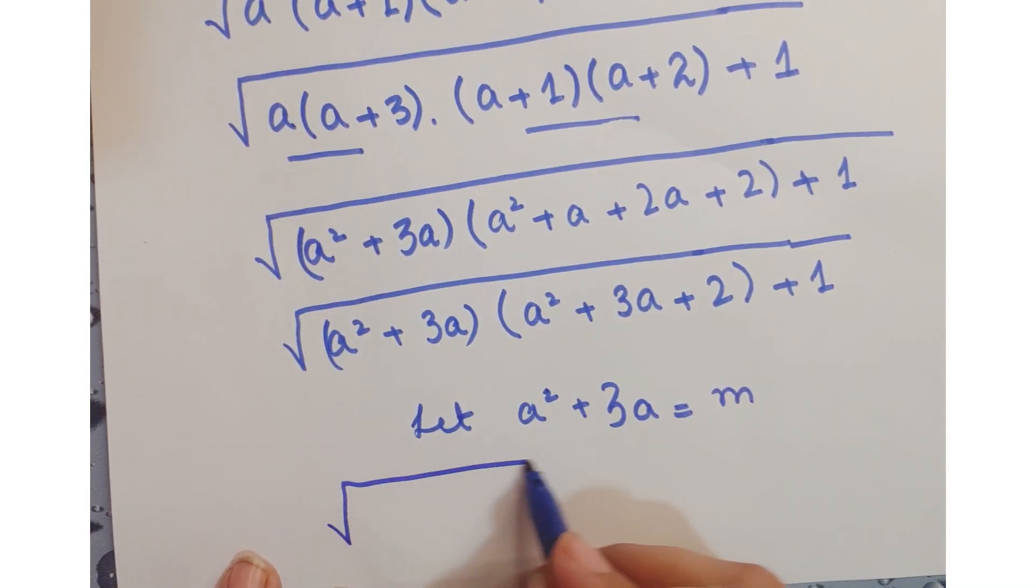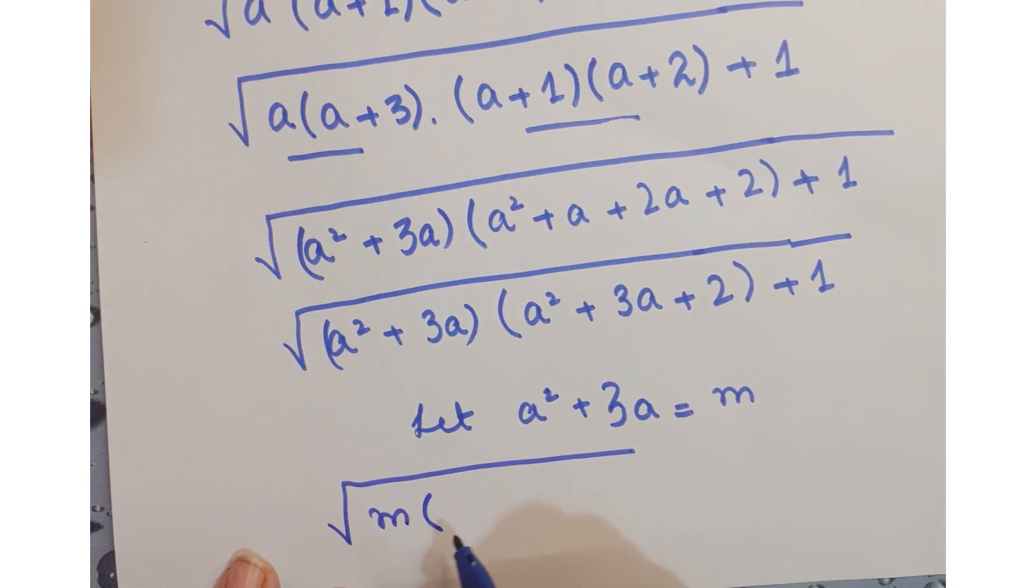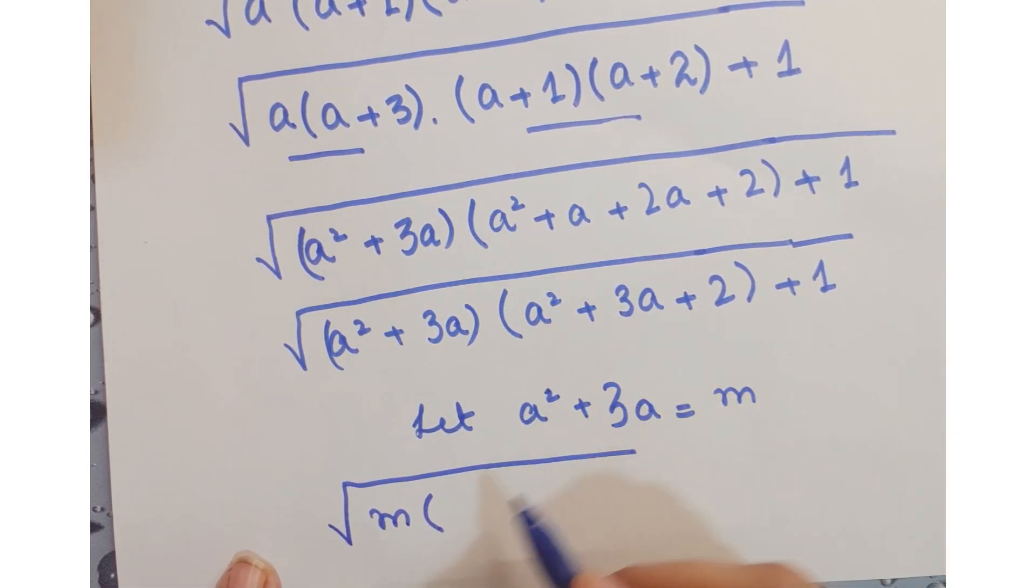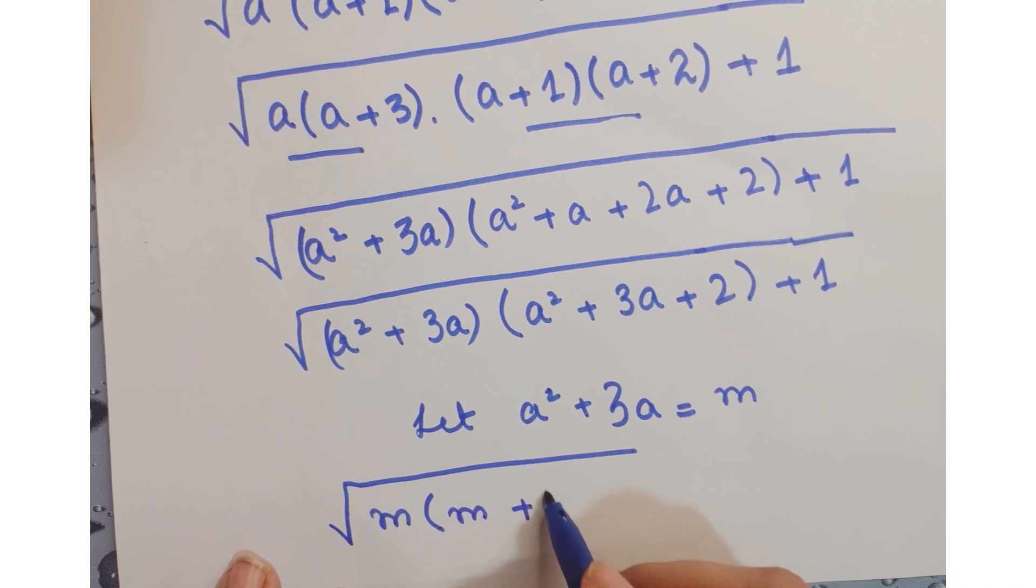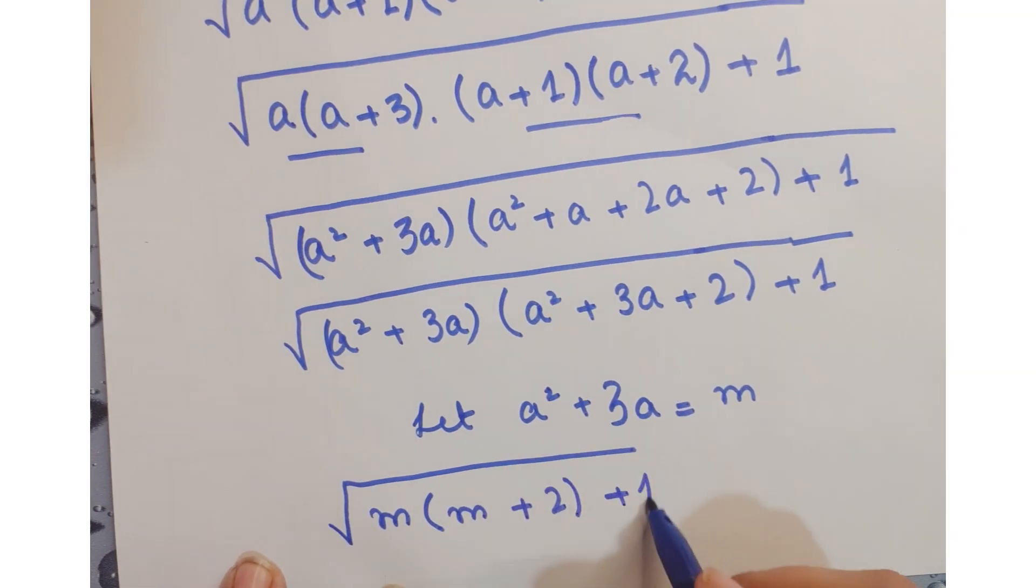Now let's assume that a squared plus 3a equals m. So you can write it as m into (m plus 2) plus 1.